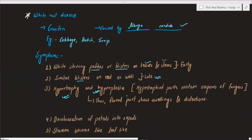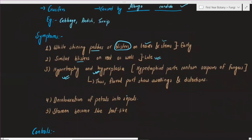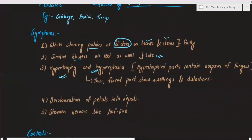Now I have to explain about hypertrophy and hyperplasia. How does the plant increase in size? The size of the plant increases. So we are talking about hyper or hypo. I have to do the study of hypertrophy or hyperplasia in the context of white rust disease.